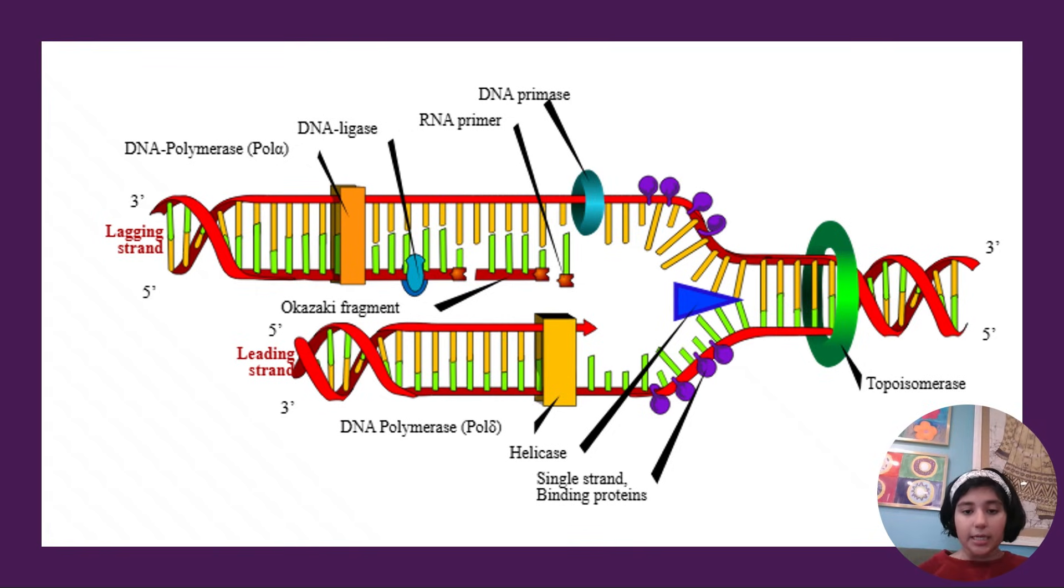The first is helicase. Helicase cuts the DNA apart. So DNA is a double helix structure and it has two strands. When DNA replication occurs, these two strands have to be cut apart and that's what helicase does. Each strand of DNA has single-stranded binding proteins.